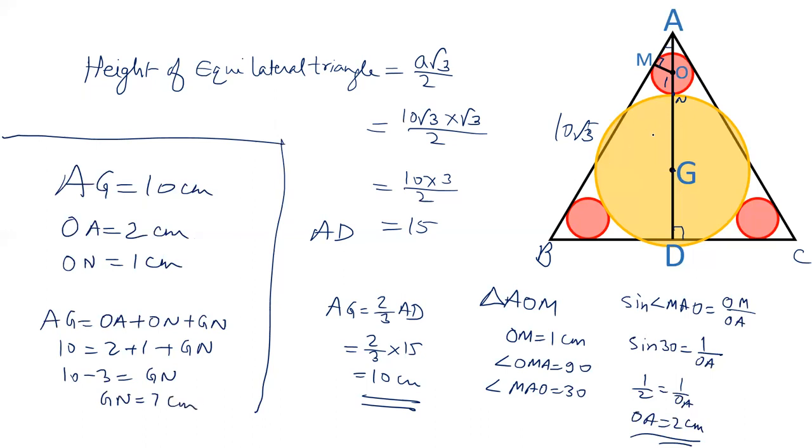And GN is nothing but the radius of the bigger circle. Now we can also calculate the length of GD. GD is 5 centimeter. So this extra part is 2 centimeter. Because the radius is 7 centimeter. So radius of the bigger circle is 7 centimeter.